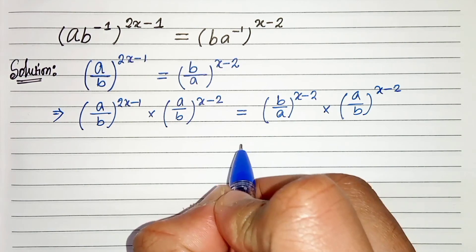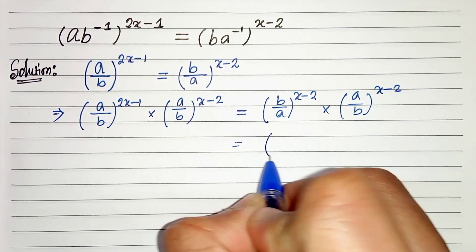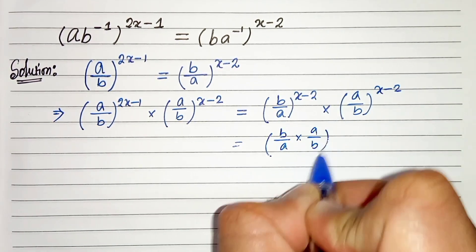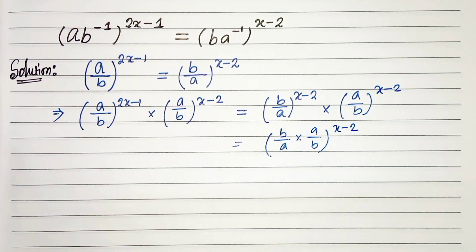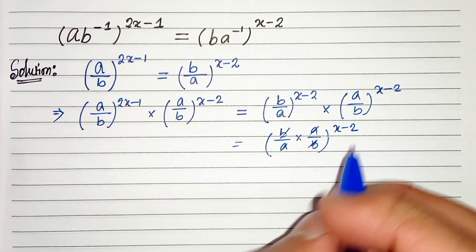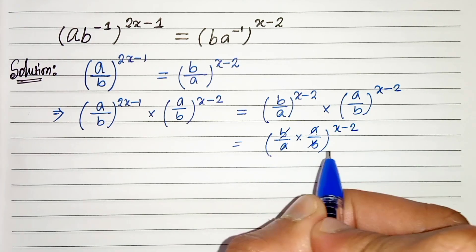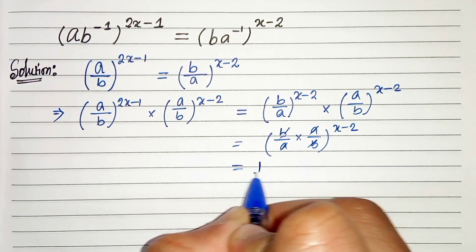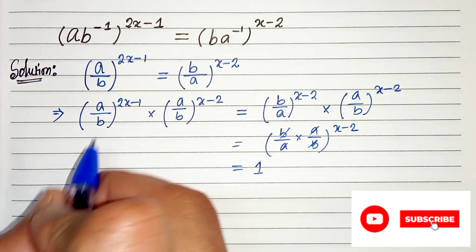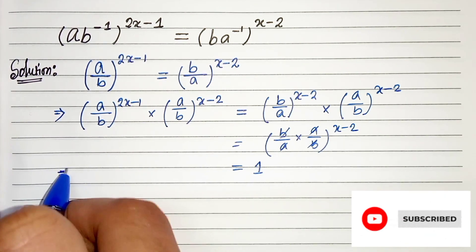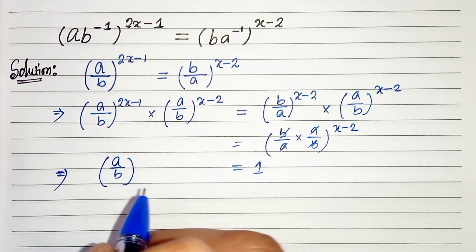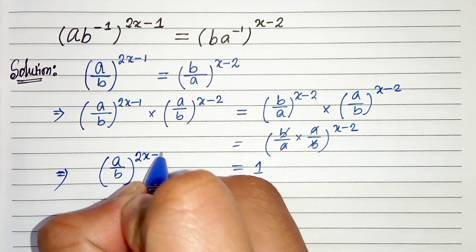On the right-hand side, both terms have the same power, so we can write (b/a)·(a/b), whole to the power (x-2). Since a cancels with a and b cancels with b, we are left with 1^(x-2), which equals 1. On the left-hand side we have (a/b)^(2x-1) plus (x-2).